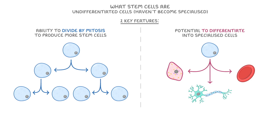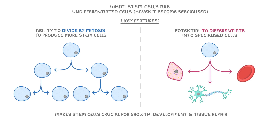These two features — being able to divide and produce via mitosis, and their potential to specialise into different cell types — make stem cells crucial for growth, development, and tissue repair. This means that when your body needs new cells, like for repairing a cut on your skin, stem cells can do this by forming lots of the correct type of cell.